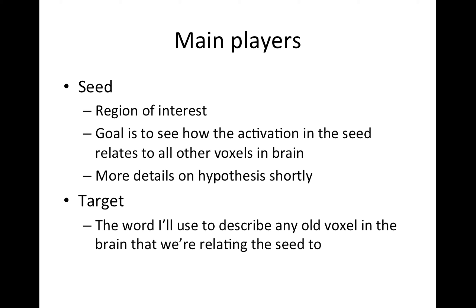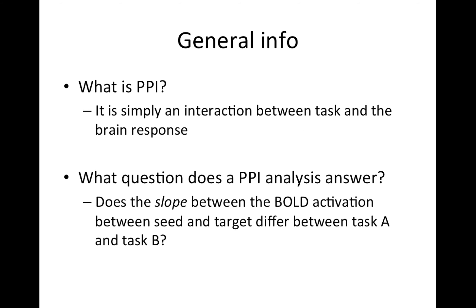And the target, I'm just going to use the word target to describe any old voxel in the brain. This is a whole brain analysis, so the seed is fixed, but the target will change. You can think of this as the target moving over the brain, and you're running this model in a mass univariate approach. So what is a PPI? It is simply an interaction between the task and the brain responses. How does the slope between the bold activation between the seed and the target differ between task A and task B? The test is only being applied to slopes, so I will stick with slope.